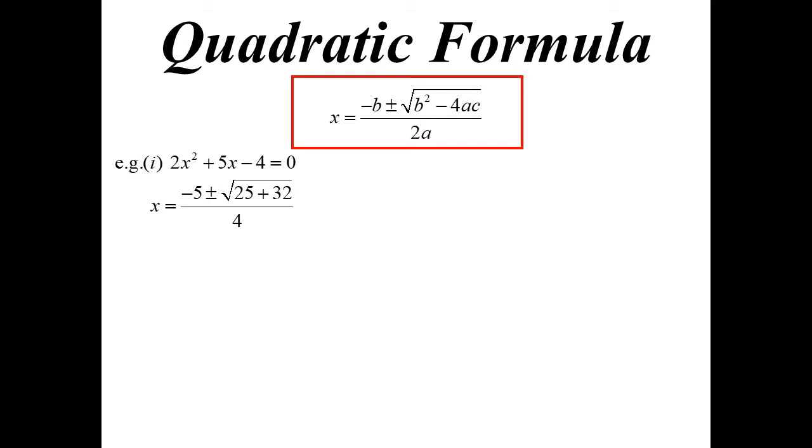So, 25 plus 32 is 57, and that's why we couldn't find the factors, because we don't know what the square root of 57 is. So we get negative 5 plus or minus the square root of 57, all over 4. That of course is an exact answer. And in maths, we like exactness, and so we're quite happy with that.